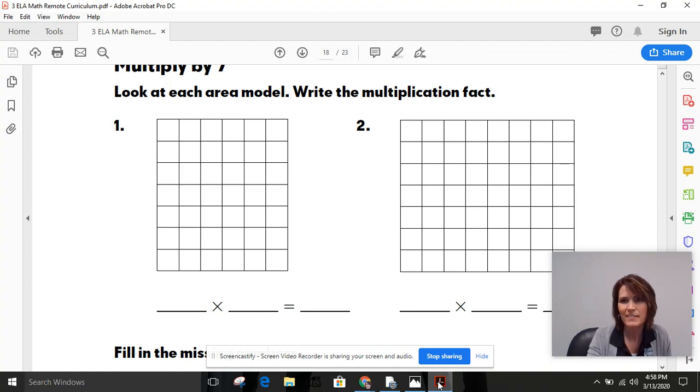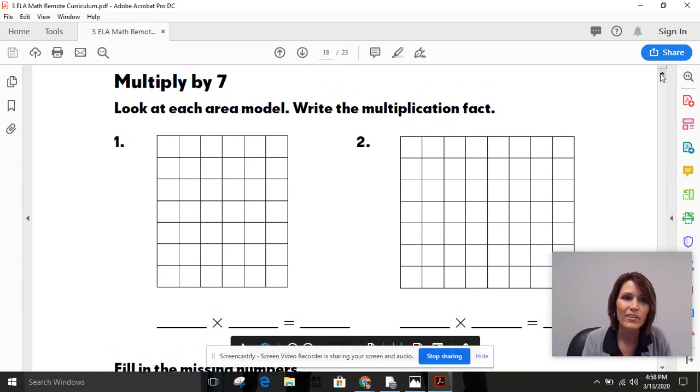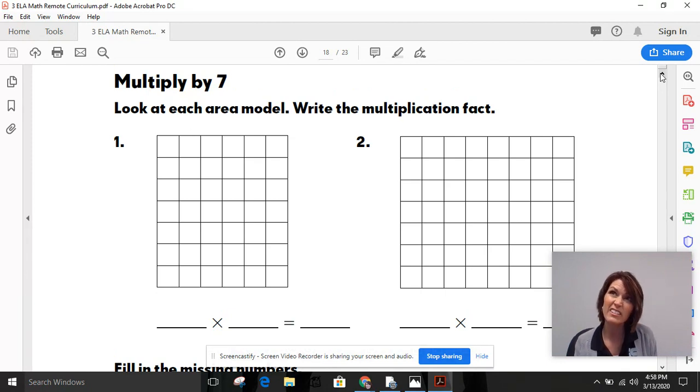Hi there, my third grade friends. I'm excited to be with you today to talk some more about multiplying by seven. Yesterday, we talked about the strategy of thinking about a group of five and then thinking about a group of two, and so to help us put those together to multiply by seven. So today, we are going to continue practicing multiplying by seven and looking at it in a slightly different way.